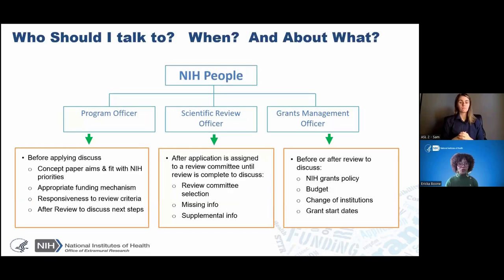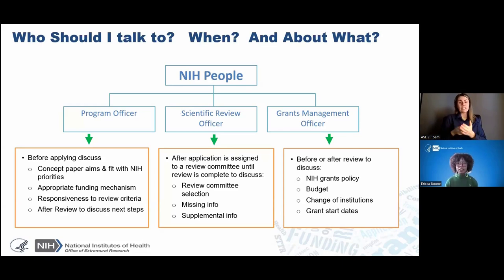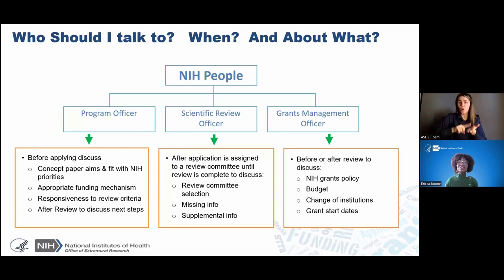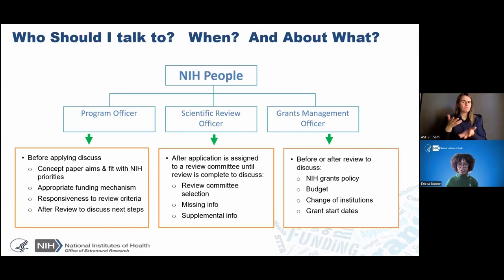When do you talk to them? For program officers, reach out well before your application is due. They understand the priority research areas and funding priorities for their institutes and centers, so you want to make sure your research fits into the priorities of that institute. After your application has been assigned to a review committee, contact your scientific review officer — this is the person you talk to if you need to provide missing or supplementary information. Grants management officers can be contacted before or after the review to discuss budget issues, changes of institution, or start date issues.